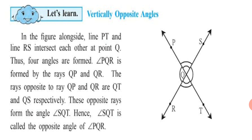Let's learn about vertically opposite angles. In the figure alongside, line PT and line RS intersect each other at point Q, and you can see 4 angles are formed: angle PQR, angle RQT, angle SQT, and angle PQS.